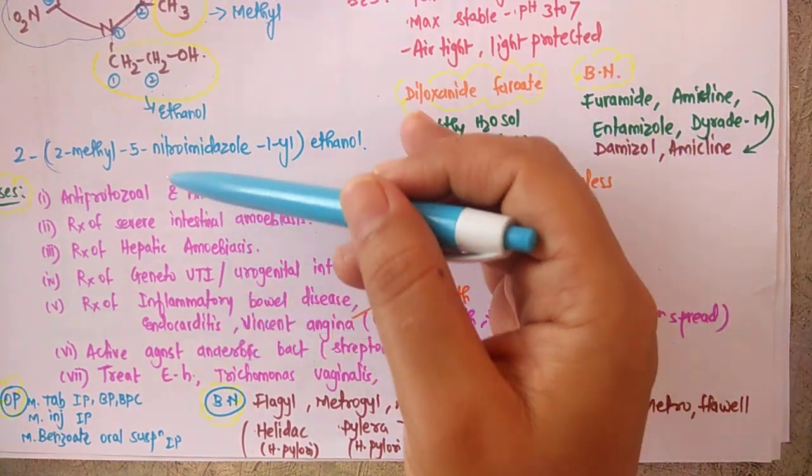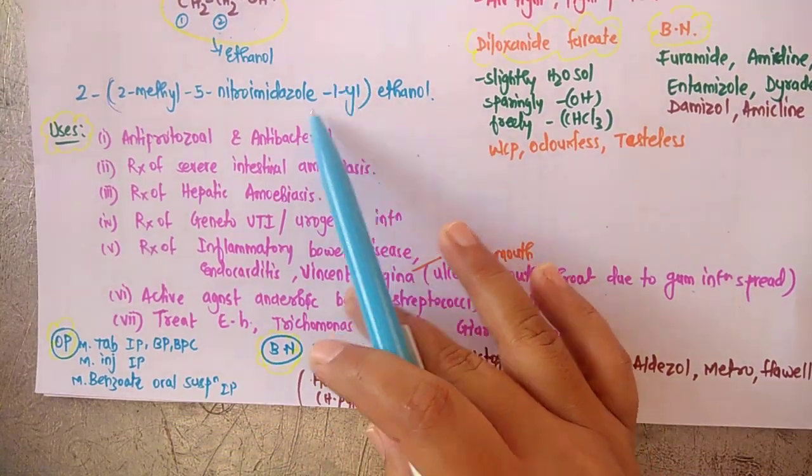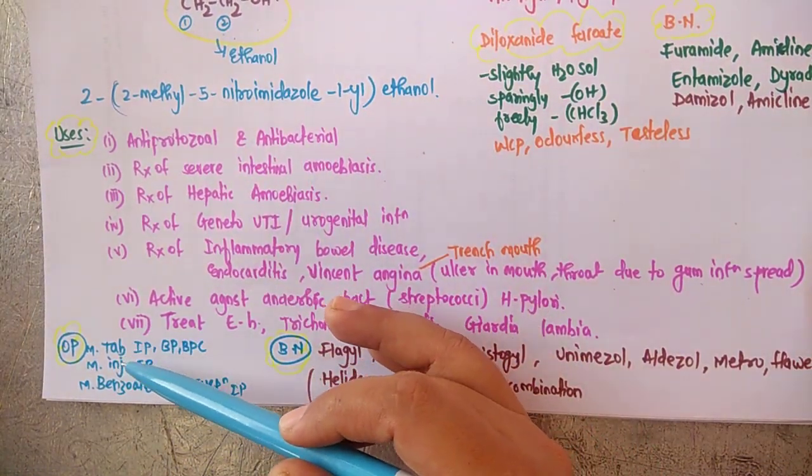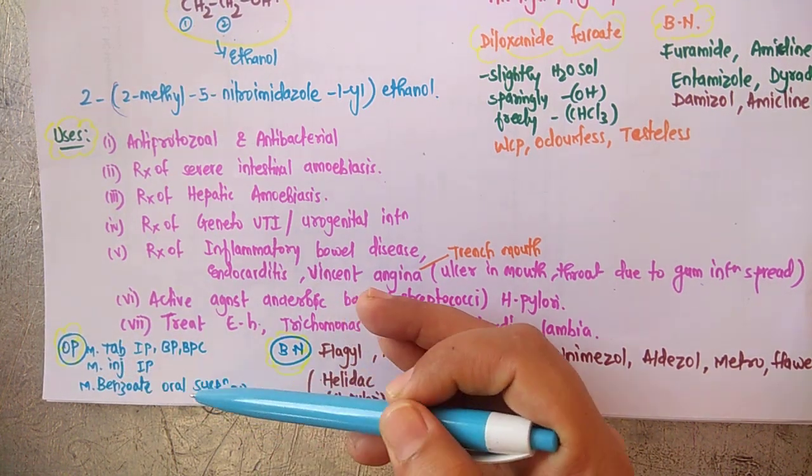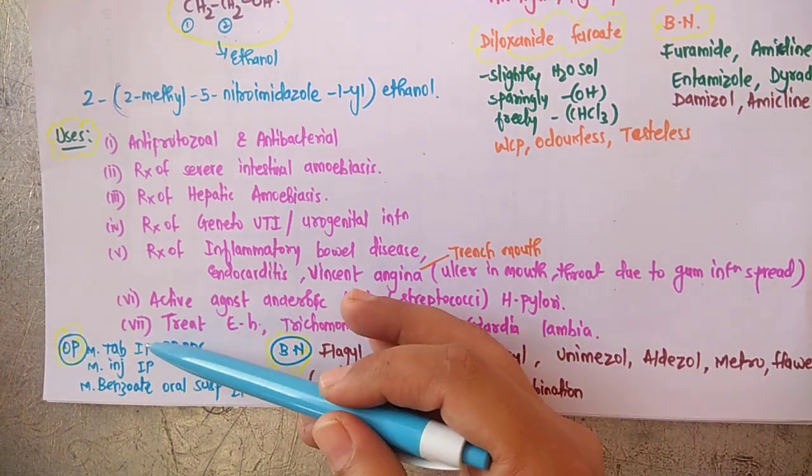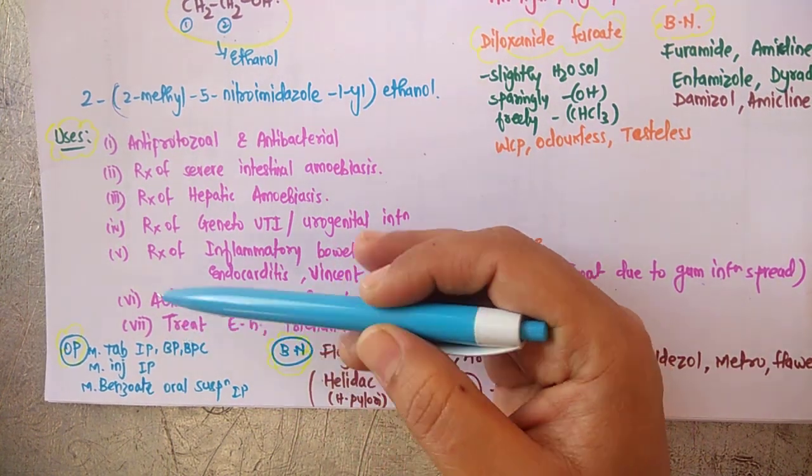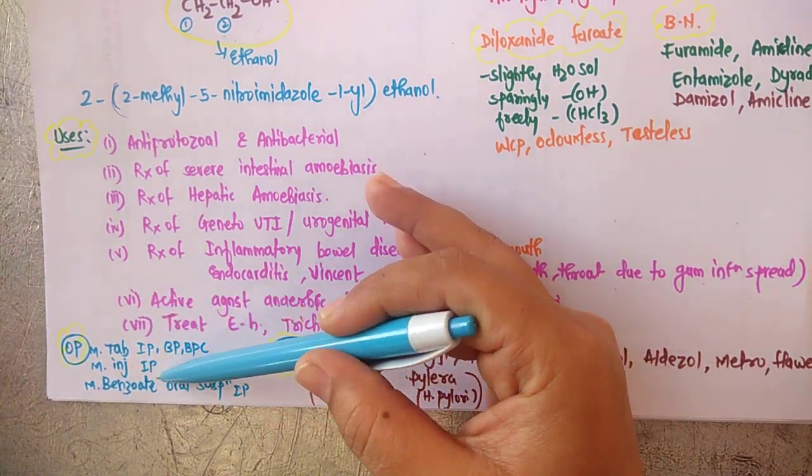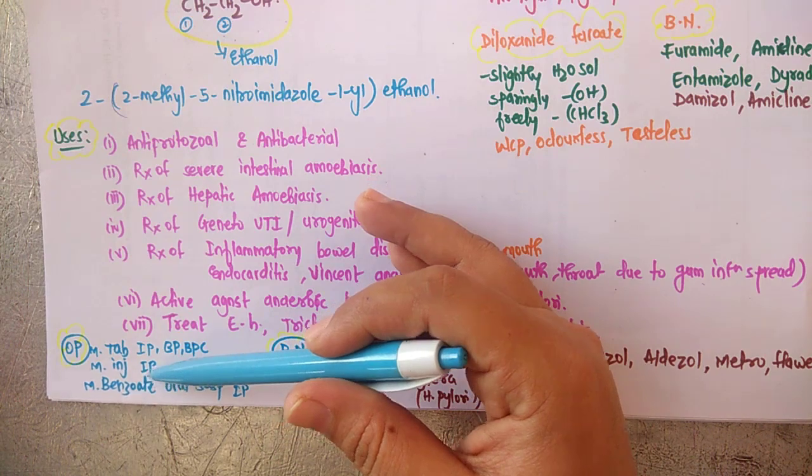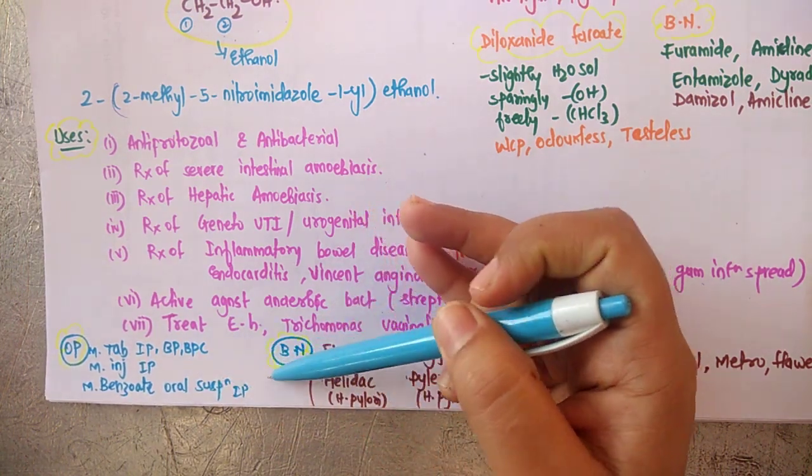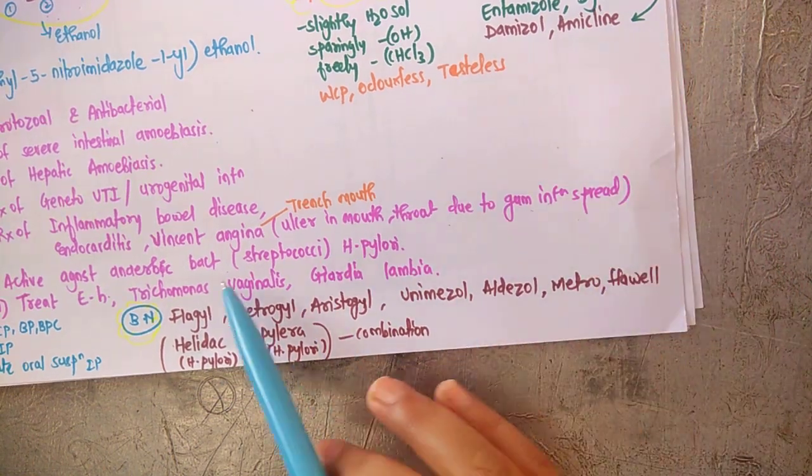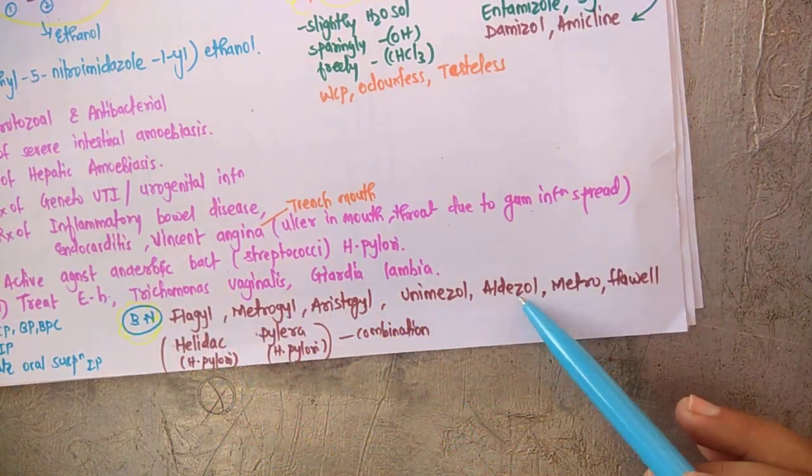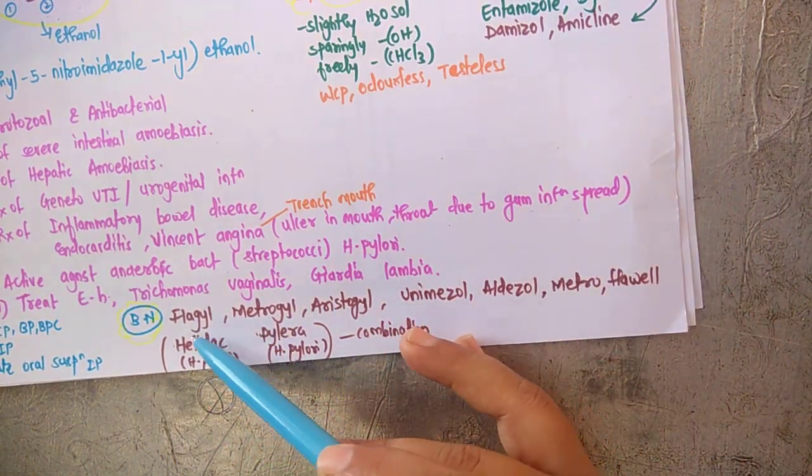Now coming towards the official preparations. Official preparations of metronidazole are tablet, injection, and suspension. So it is metronidazole tablet IP, BP, BPC; metronidazole injection IP; and metronidazole benzoate oral suspension IP.